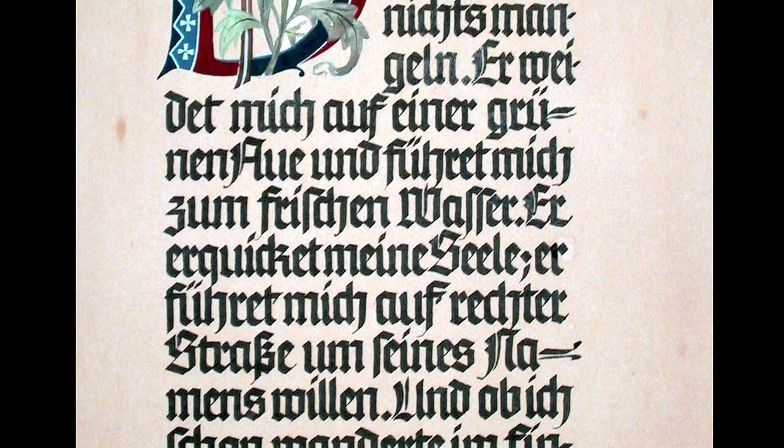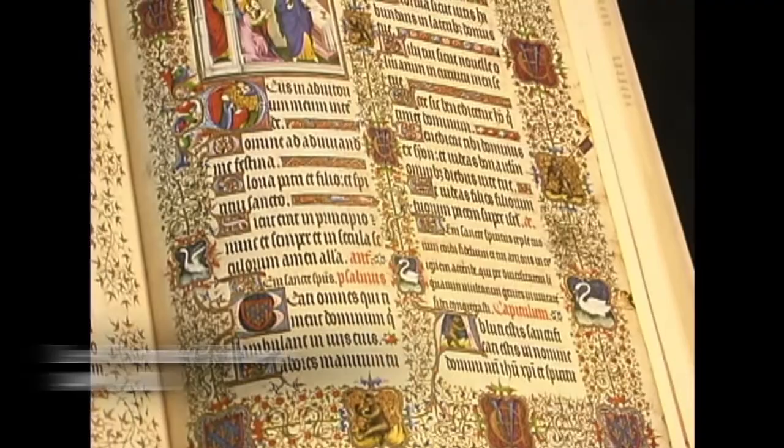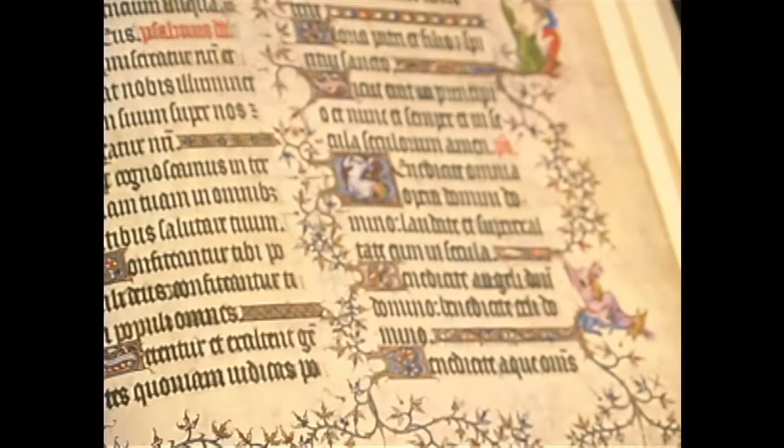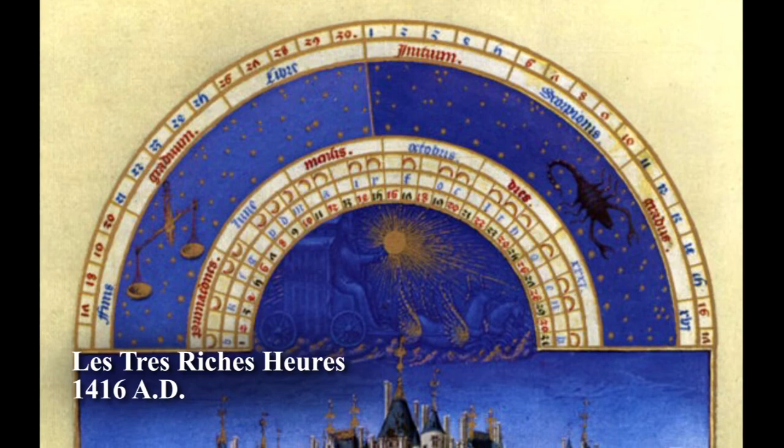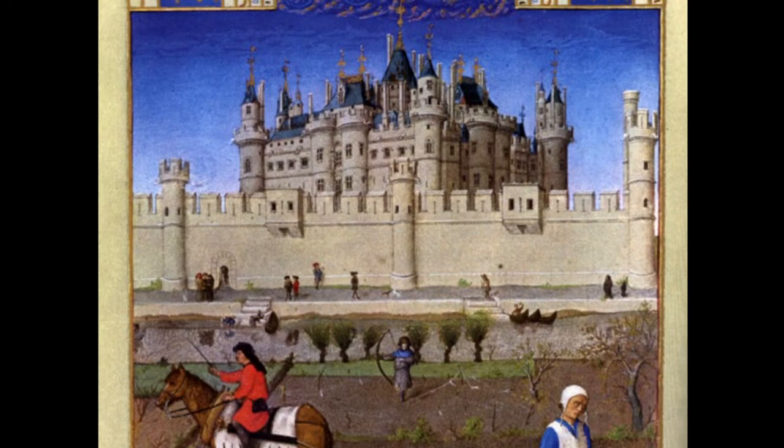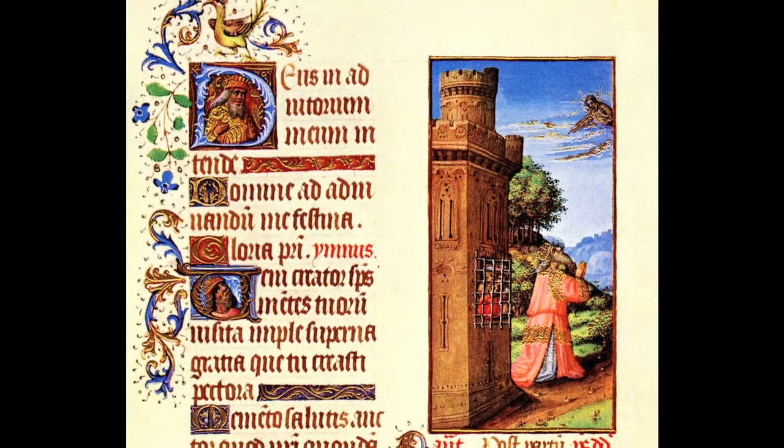In the 13th century, the Gothic style became popular, not only in architecture, but in calligraphy as well. The French noble and art patron Jean de Berry commissioned several devotional prayer books. The most famous of the Books of Hours are Les Grandes Heures and Les Très Riches Heures. The Flemish Limbourg brothers completed Les Très Riches Heures in 1416, a masterpiece of illuminated lettering.